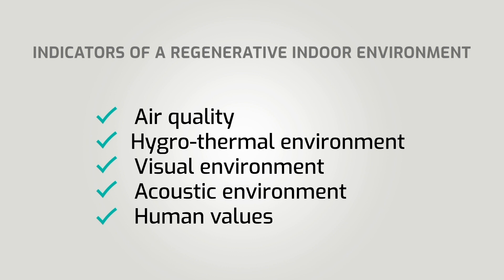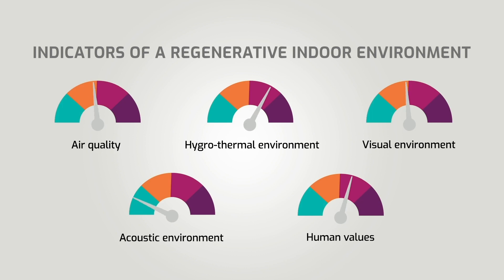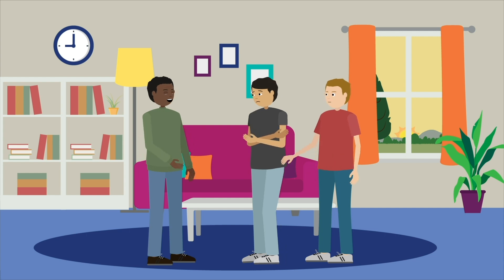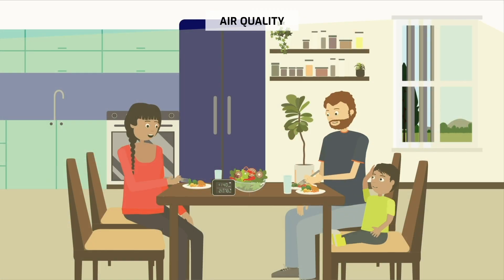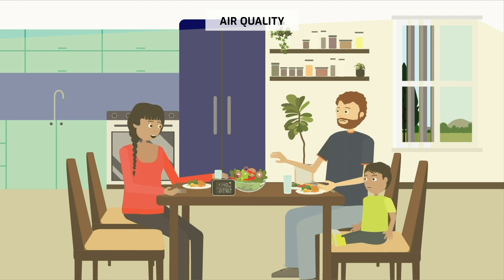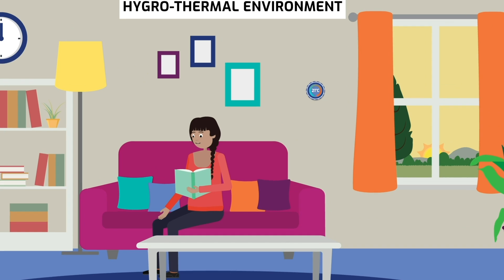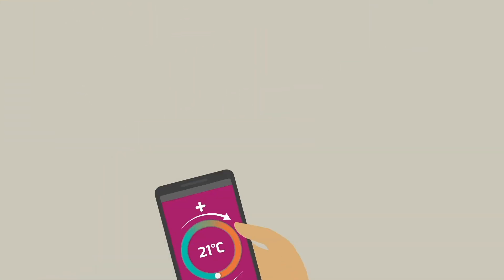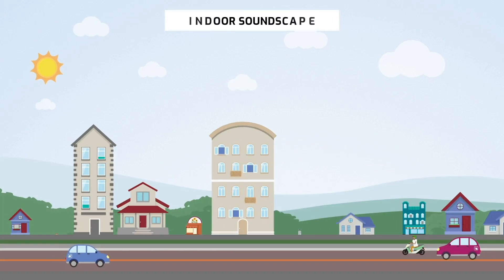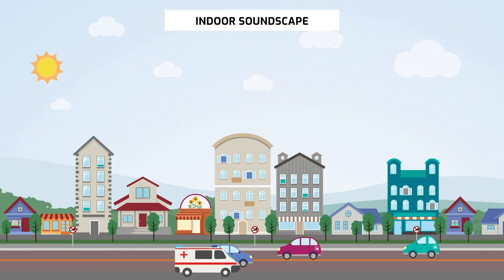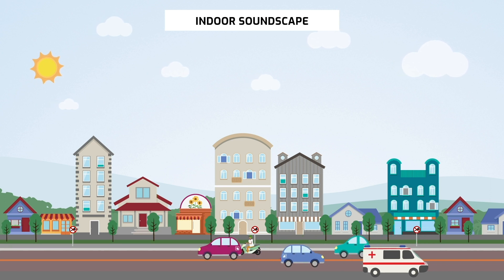These regenerative performance indicators can be measured using different methodologies, both with instruments and by collecting users' perceptions. For example, we can measure levels of air contaminants and occupant satisfaction. Temperature, humidity, and air circulation are well-known parameters affecting occupant well-being. External noise impacts well-being positively or negatively and can be assessed indoors using acoustic technologies.